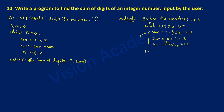Now n is 12. While 12 is greater than 0 — condition is true again. First statement: rem = 12 modulo 10, which gives remainder 2. So 2 is equated to rem. Next, sum = sum + rem. The previous sum was 3, so 3 plus 2 equals 5, and 5 is equated to sum.